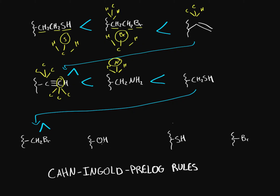Now what about this one? Instead of having a carbon as the first attachment, we have an oxygen — so it's ranked higher because oxygen comes before carbon. Next, if the first attachment is a sulfur, sulfur has a higher atomic number, so it's ranked higher still. And bromine has a higher atomic number than sulfur, so it's going to be ranked the highest.